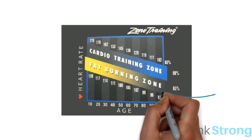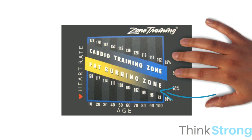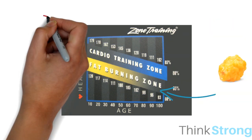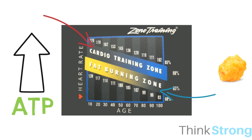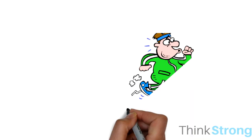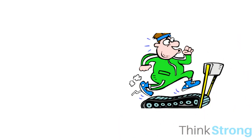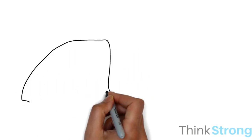At lower intensities, the muscle can resynthesize enough ATP by primarily using fat, but as intensity increases, the rate at which ATP is used also increases. To keep working at higher intensity, the rate of ATP resynthesis has to match it. This higher intensity will switch the energy turnover from fat towards the use of glucose or glycogen from carbohydrates, which resynthesizes ATP faster than burning fat, but is not as efficient.